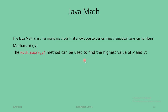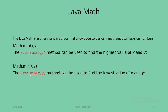The Math class methods have two arguments, and we can pass two values into these methods. The math.max method can be used to find the highest value of x and y. The second one is math.min method, which is also a Java Math class method and can be used to find the lowest value of x.